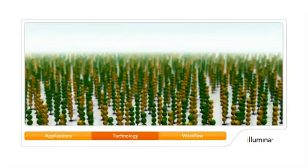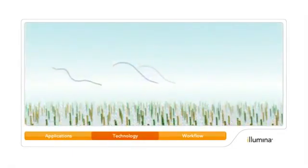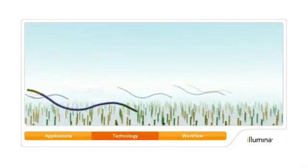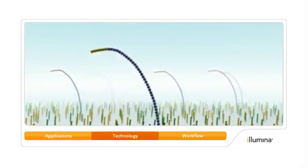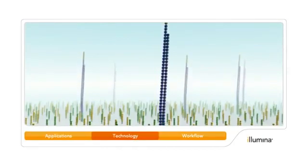These oligos bind to the adapters ligated to the library fragments. Single DNA molecules hybridize to the lawn of oligos. Bound fragments are extended to create copies. These copies are covalently bound to the flow cell surface.